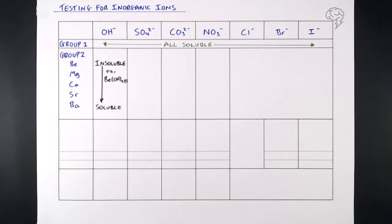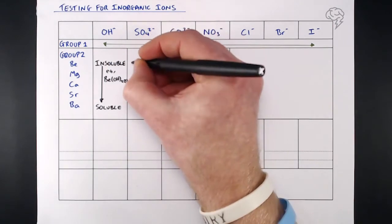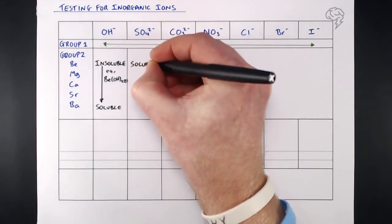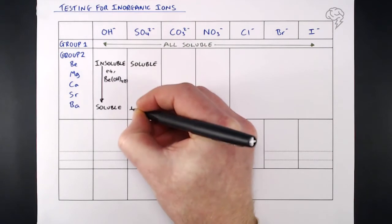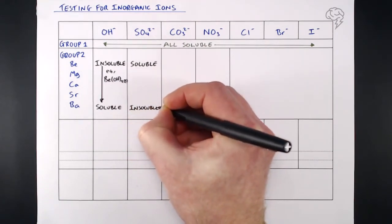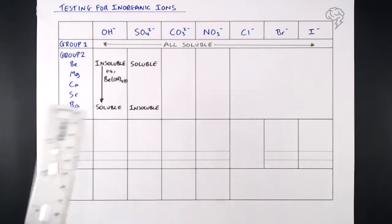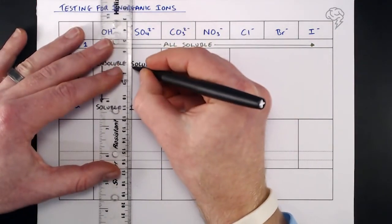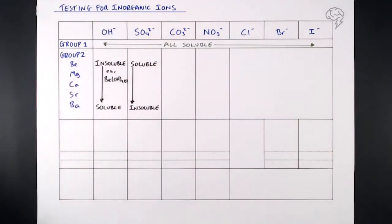When it comes to Group 2 sulfates, the opposite is true. The ones at the top are very soluble — beryllium and magnesium sulfate tend to be very soluble — whereas at the bottom they're insoluble. Strontium sulfate and barium sulfate are very insoluble. The solubility of Group 2 sulfates gets smaller as you go down the group. So: hydroxides higher, sulfates smaller.